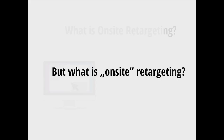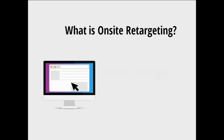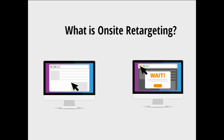On-site retargeting is about retargeting your visitors before they leave your site. It's about monitoring the behavior of your visitors, and if their behavior indicates that they are about to leave your site, you can retarget them with the right message at the right moment. The most popular solution is about monitoring the movement of the mouse, and if the visitor is moving the mouse out of the window with the right speed and velocity, the pop-up will appear at the right millisecond. In fact, it is not a real pop-up but an overlay, which makes it absolutely Google-friendly.